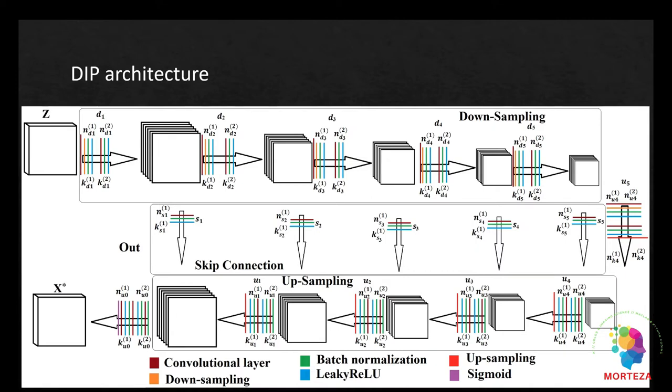which has upsampling and downsampling blocks along with skip connections and so on, like encoder-decoder architecture, is optimized using gradient descent to generate the prior of the noisy image, which is a denoised version of X. And the denoised version of X is shown as X star.